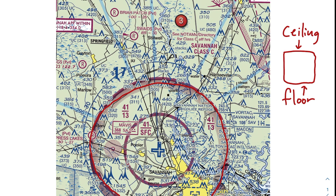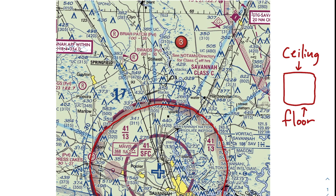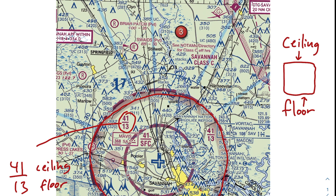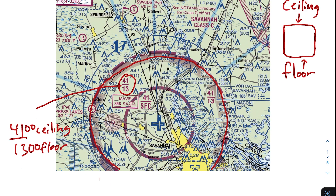There are some numbers within this sectional chart that should help us figure out the floor of our airspace, and those numbers are 41 over 13. The cool thing about the way this information is presented is it aligns almost perfectly with your expectation of ceiling and floor — the ceiling is up top and the floor is down bottom. We can disregard the 41 ceiling and look at this 13 for the floor. Obviously the floor is not at 13 feet — when you see one number over another, you want to add two zeros after the number. So the floor of our outside circle is 1,300 feet.